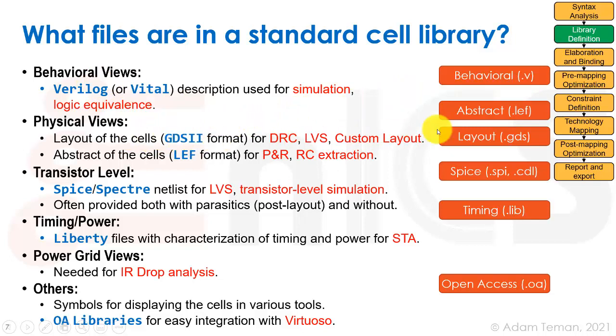Then we have the physical views, which are going to be the LEF, and we discussed LEF a lot in this lecture. And the layout, which is going to enable us to provide the specific polygon layout that we can send to the fab. Transistor level, we're going to have spice files, for example. Timing and power and noise files, which are in Liberty format usually. Synopsys uses a .db, which is a compiled type of a Liberty format. You know, NLDM, ECSM, CCS types of files, that's for static timing analysis. Power grid views, and those are needed for IR drop analysis, and others such as symbols and OA libraries that we can use in virtuoso.